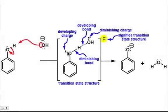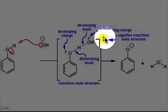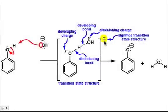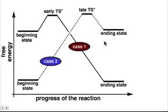We designate this entire transition state structure by the double dagger symbol shown here, highlighted in yellow. Whenever you see that particular symbol, we're always going to be talking about transition states. We can also describe our transition states as being either early transition states or late transition states.